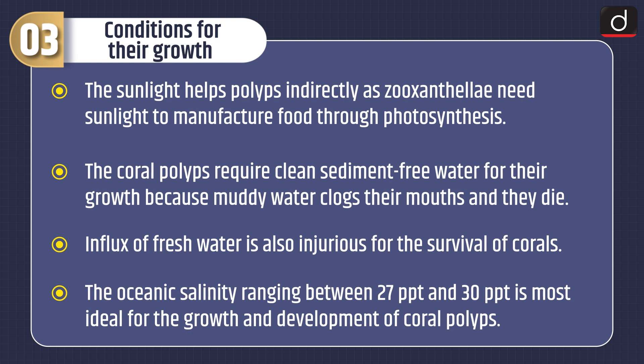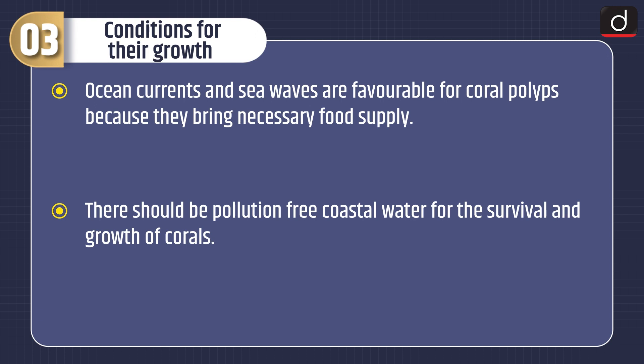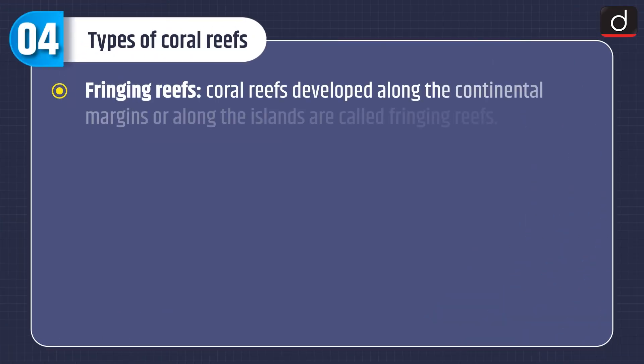The coral polyps require clean, sediment-free water for their growth because muddy water clogs their mouths and they die. Influx of fresh water is also injurious for the survival of corals. The oceanic salinity ranging between 27 ppt and 30 ppt is most ideal for the growth and development of coral polyps. Ocean currents and sea waves are favorable for coral polyps because they bring necessary food supply. There should be pollution-free coastal water for the survival and growth of corals.